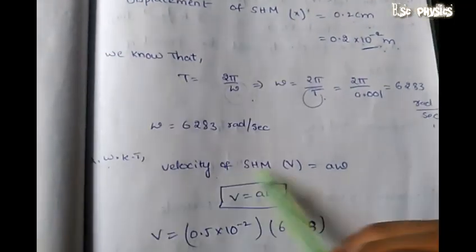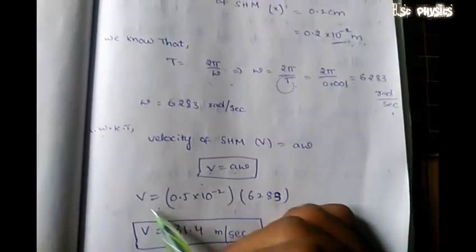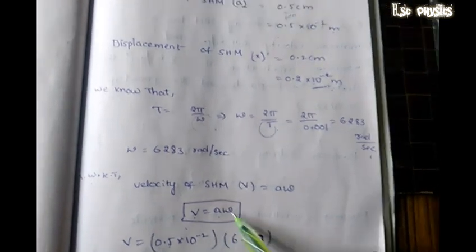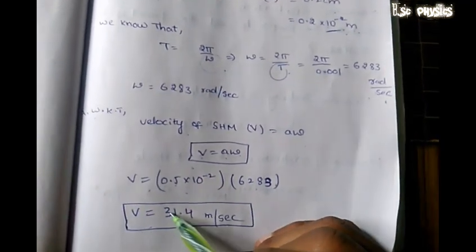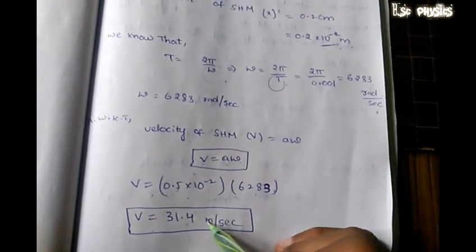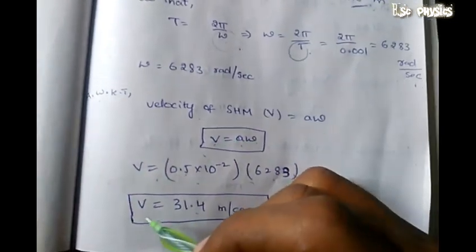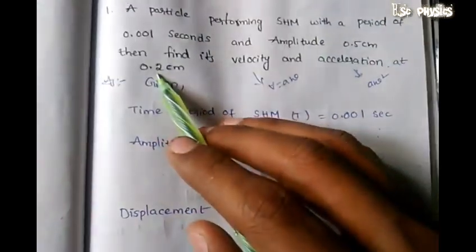The velocity of SHM is V equals A omega. So A is 0.5 into 10 to the power of minus 2 meters, and omega is 6283. So V equals 0.5 into 10 to the power of minus 2 into 6283, which gives approximately 1 meter per second.